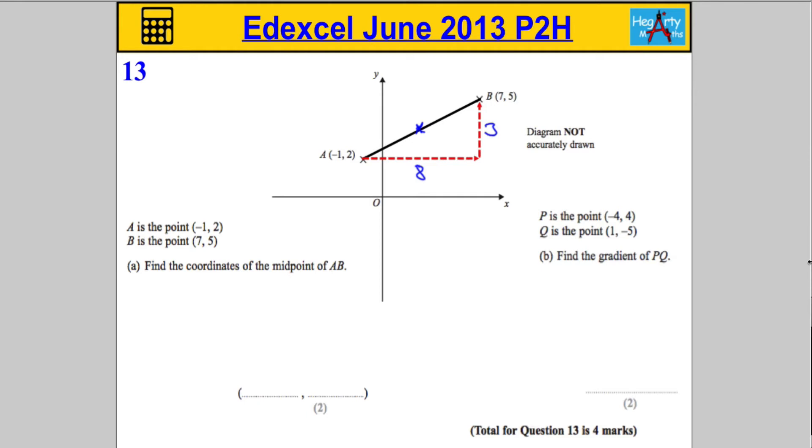Now if I want the midpoint, it must travel half the distance to the right and half the distance up. So instead of travelling 8 units to the right, it must travel 4 units. So if I started at the x-coordinate negative 1 and travelled 4 units to the right, it means that the new x-coordinate must be 3.